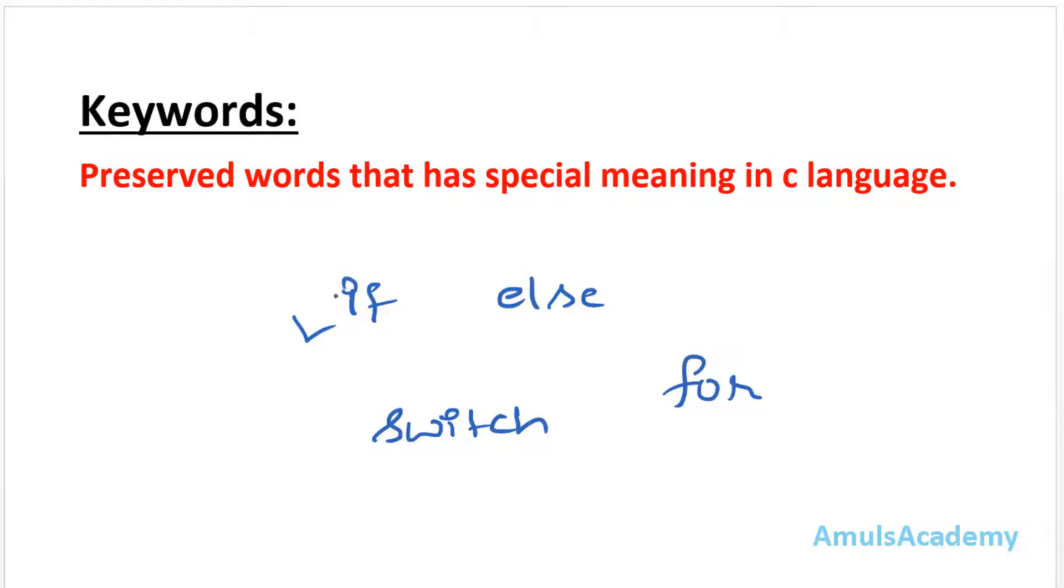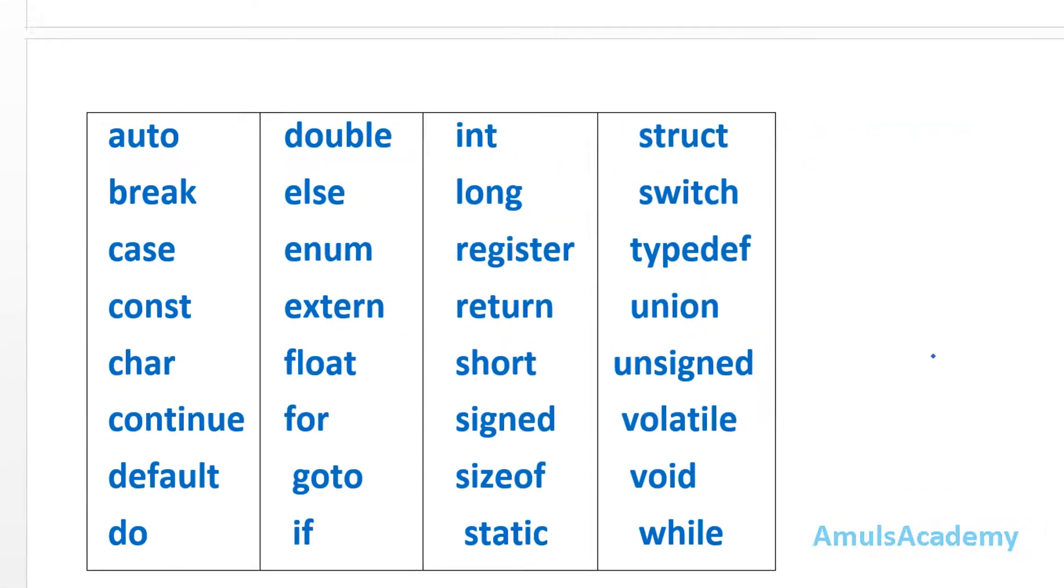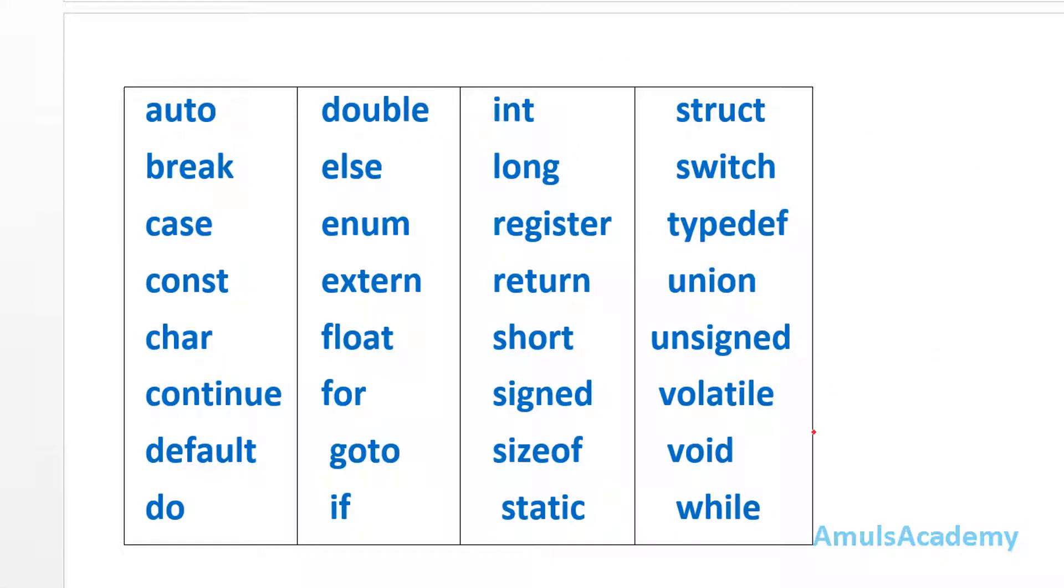Next, there are 32 keywords in the C language and they are, so these are the keywords in the C language that is auto, break, case, const, character, continue, default, do,